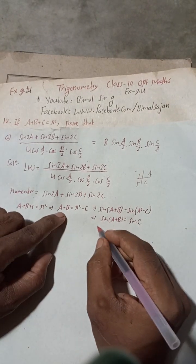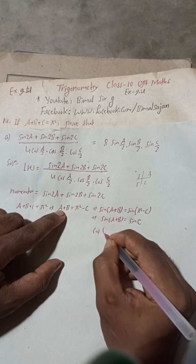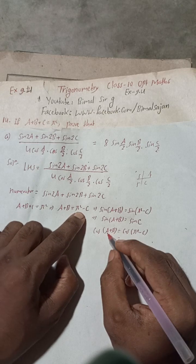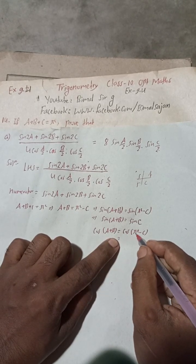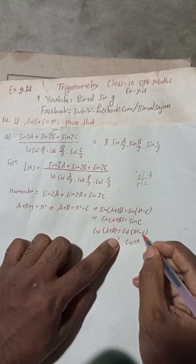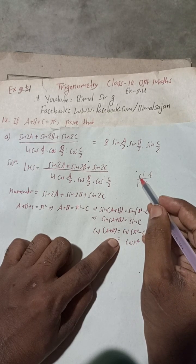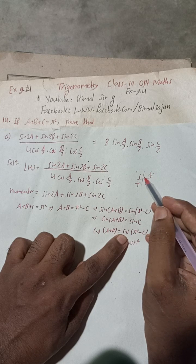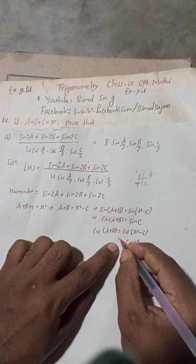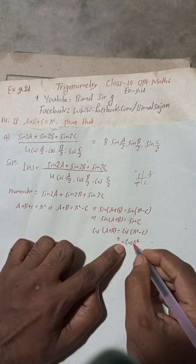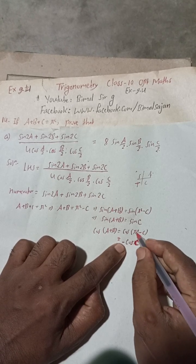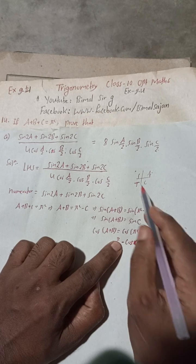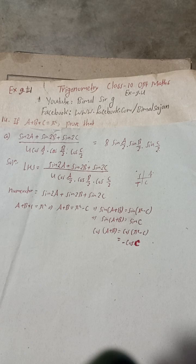Similarly, taking cosine: cos(a + b) = cos(π - c). Since π - c is in the second quadrant where cosine is negative, cos(a + b) = -cos c. So we have the two key relations: sin(a + b) = sin c, and cos(a + b) = -cos c.